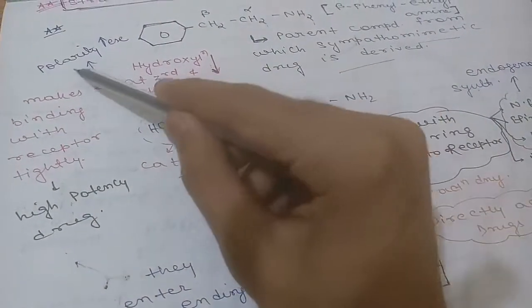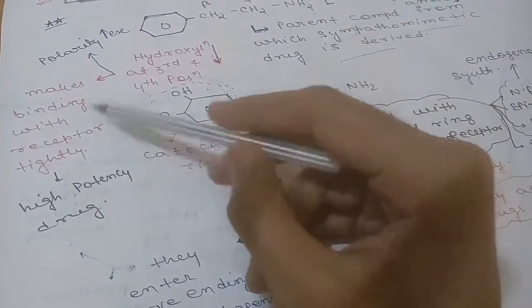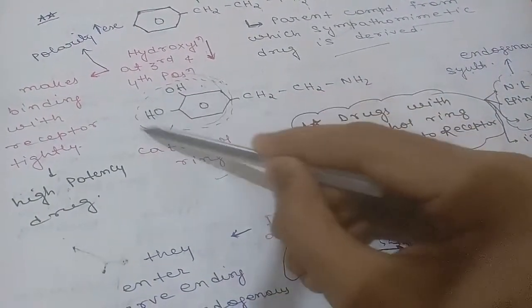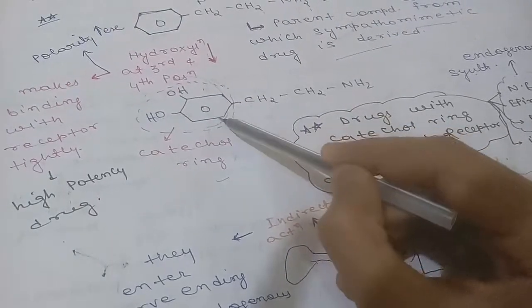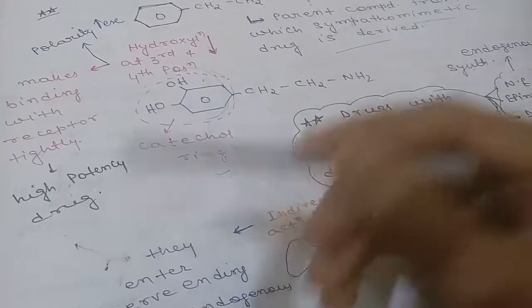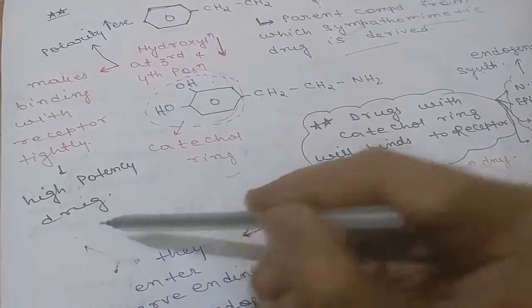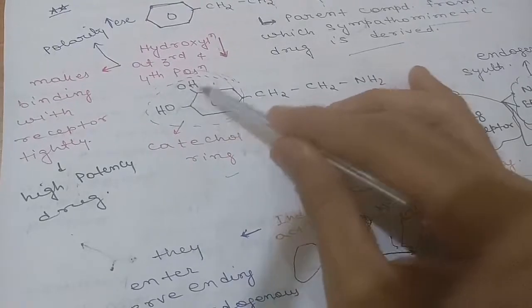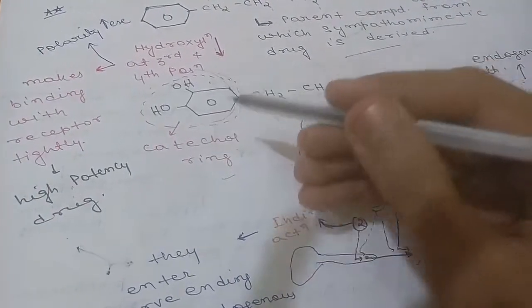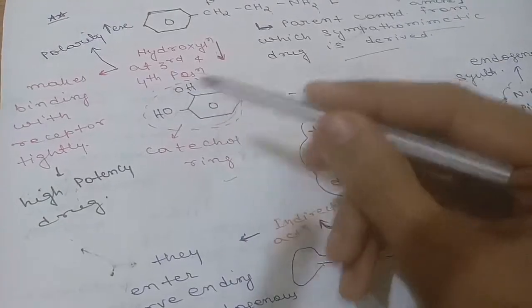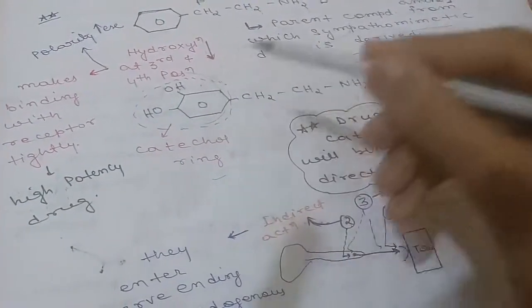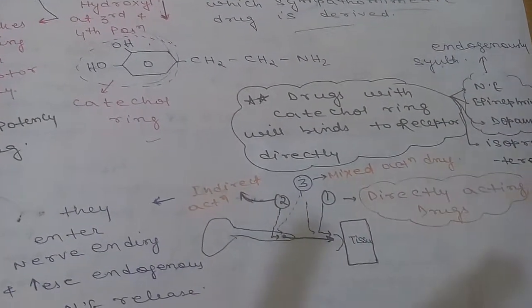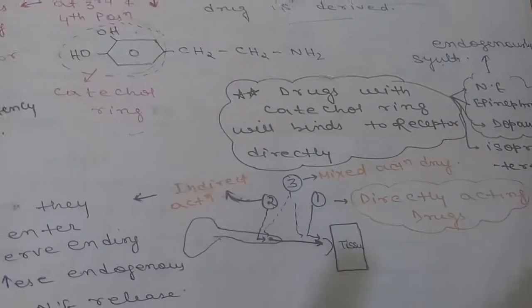Addition of these two OH groups will increase the polarity of the compound and make binding with the receptor more tight. Because of these two OH groups, the drug can bind to the receptor more tightly, meaning its potency is increased — these are high potency drugs. Drugs with the catechol ring will bind to the receptor directly.